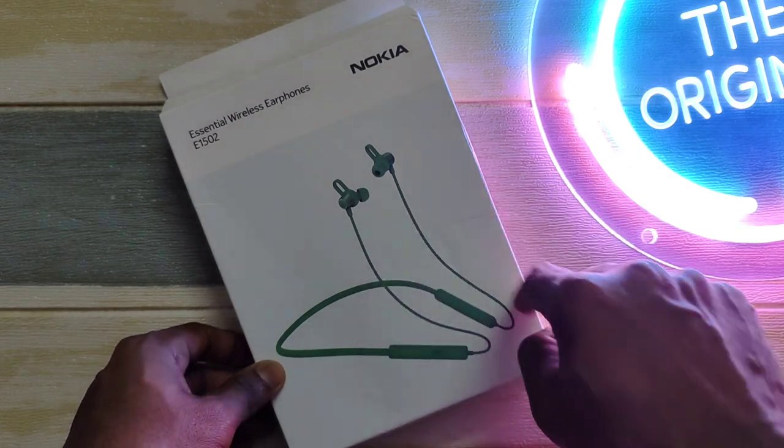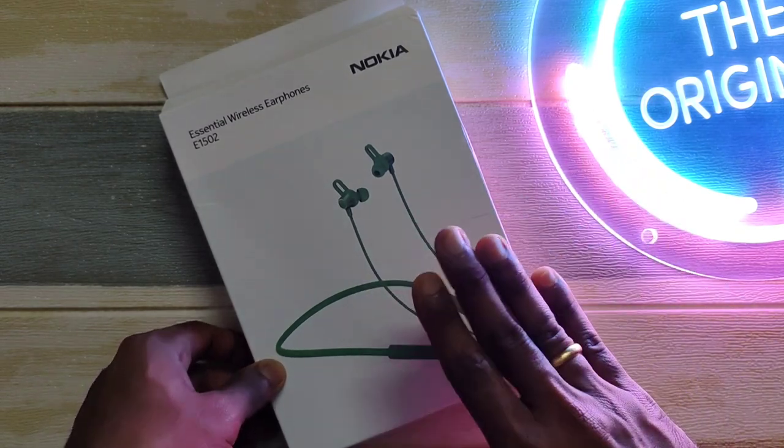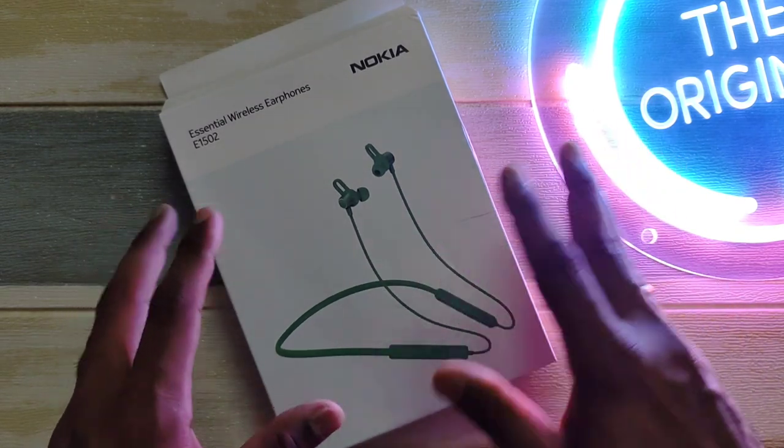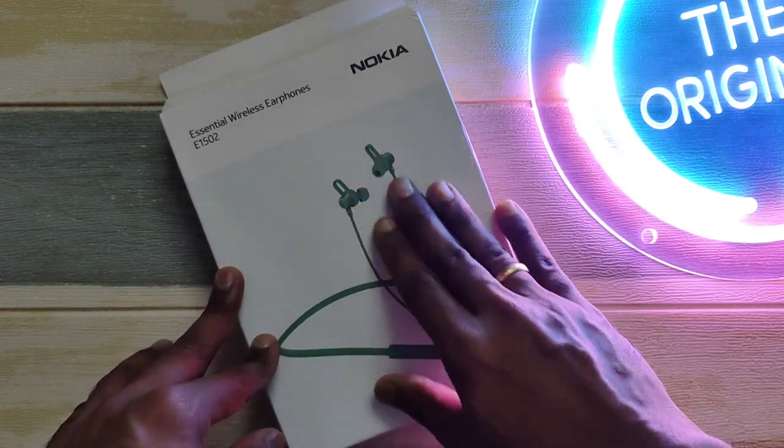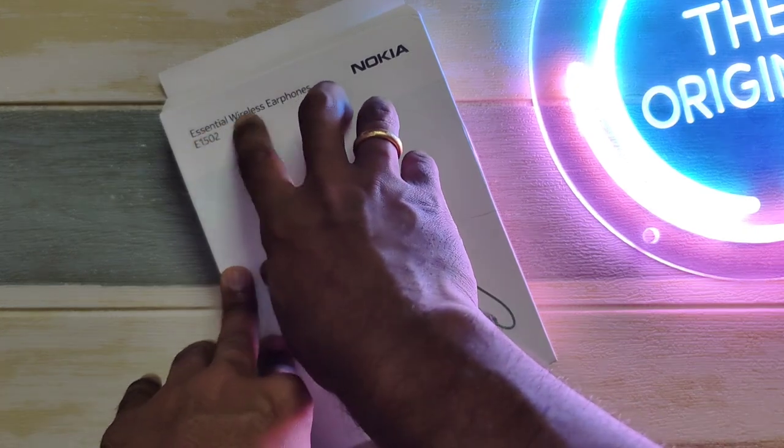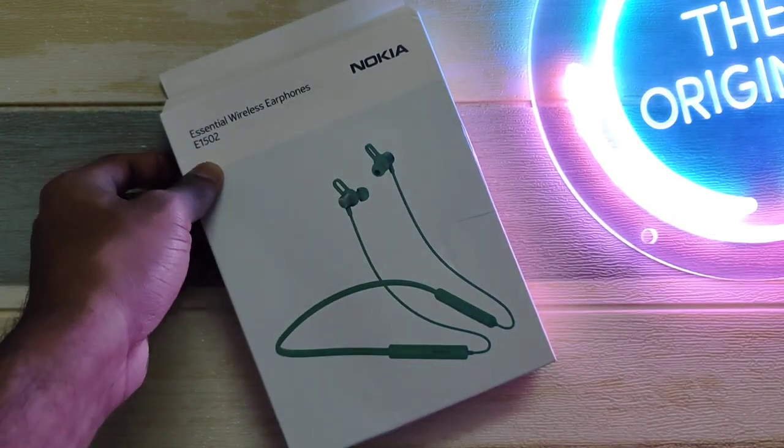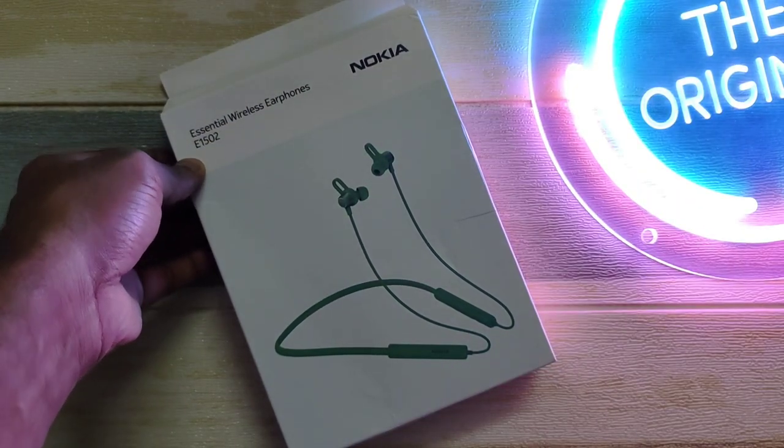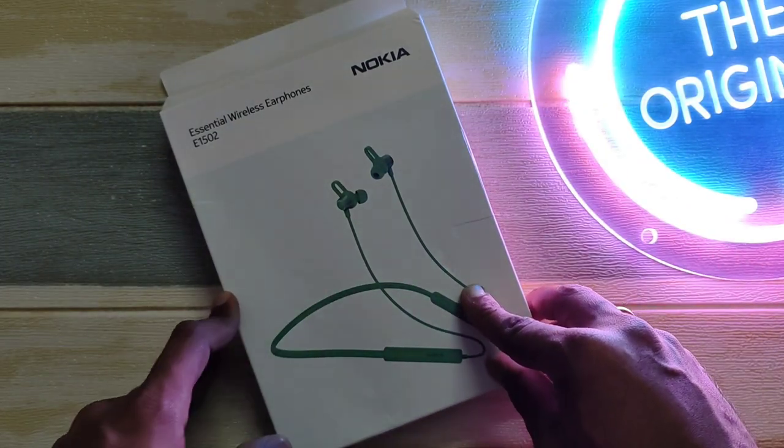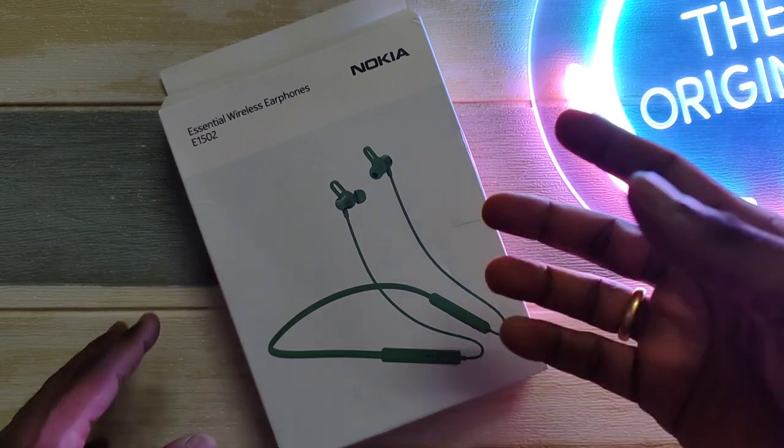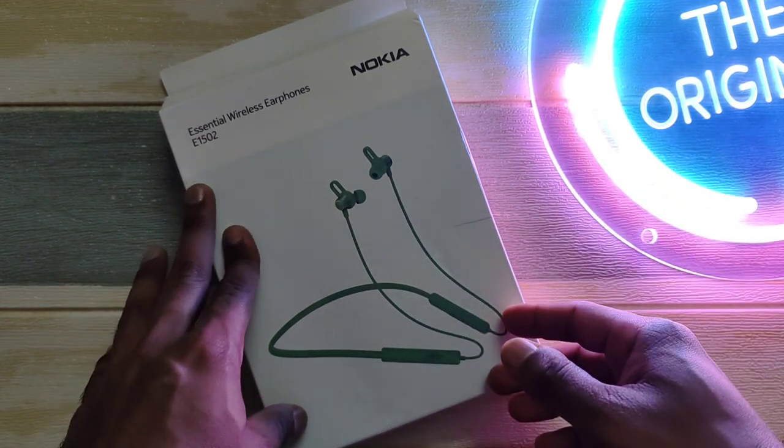So this is the neckband type of earphone and there aren't many manufacturers producing earphones, especially the neckband type with this type of color. As you can see, it's written here Essential Wireless Earphone E1502. So this belongs to the E-Series. One thing common with all devices made by Richco is that not only they are affordable but they do offer more than what they are asking for.